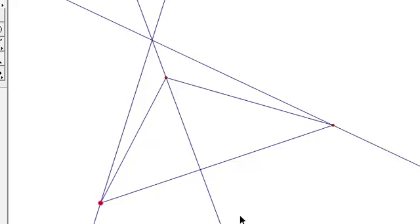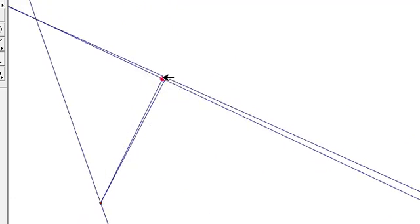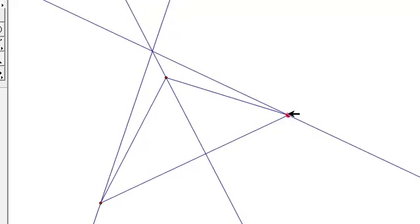This point is called the orthocenter, and the orthocenter will exist no matter what triangle you create. Sometimes it's just off our screen here.